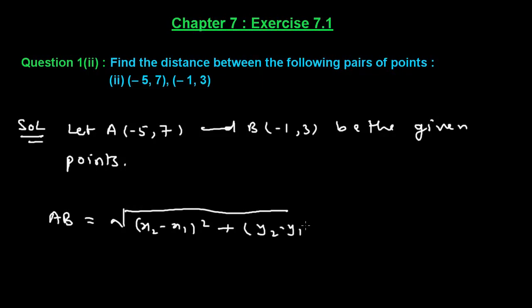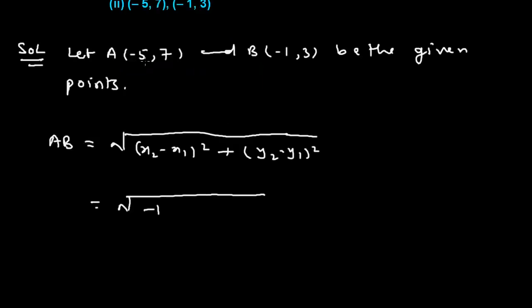Here x2 is -1 and x1 is -5, so we shall subtract -5 from it and find the square of this value. Plus, y2 is 3 and y1 is 7, so we shall find the square of 3 minus 7.